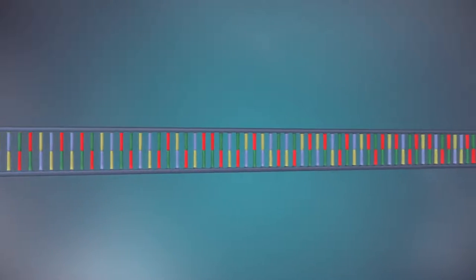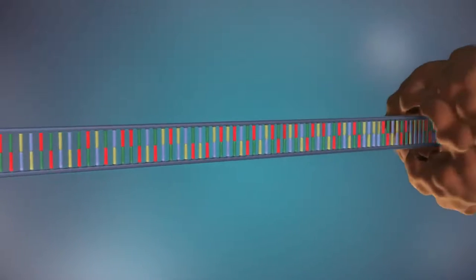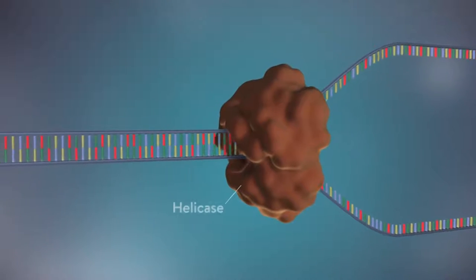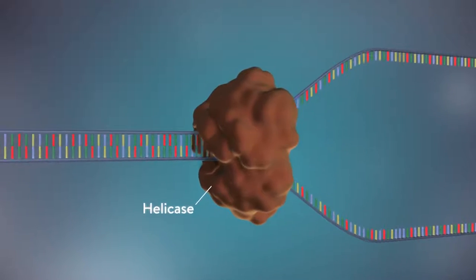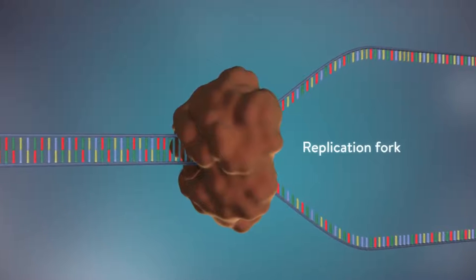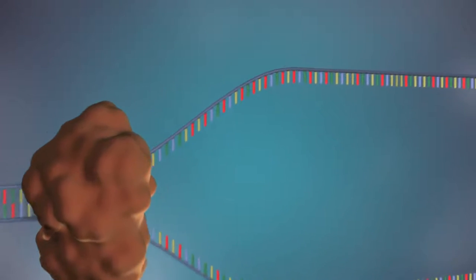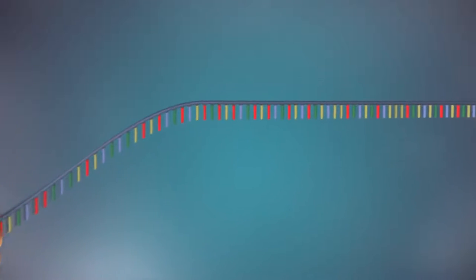The first step in DNA replication is to separate the two strands. This unzipping is done by an enzyme called helicase and results in the formation of a replication fork. The separated strands each provide a template for creating a new strand of DNA.